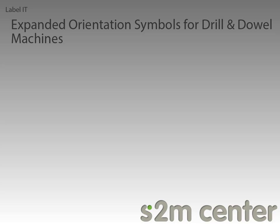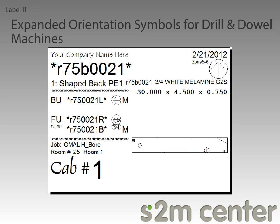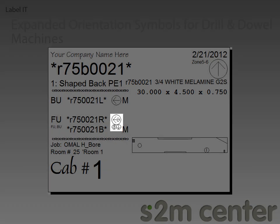The final new feature is the expanded orientation symbols for drill and dowel machines. Let's take a look at a sample output to see what this means. The arrows will indicate how the part should be fed into the machine, and since this part was on the saw face down, the face up programs will require the part to be flipped. When two programs share the same name but different face up/down requirements, then multiple arrows will be shown to accommodate.